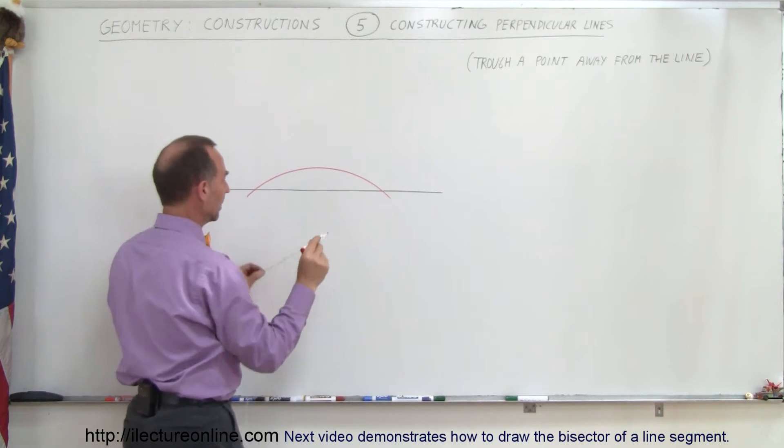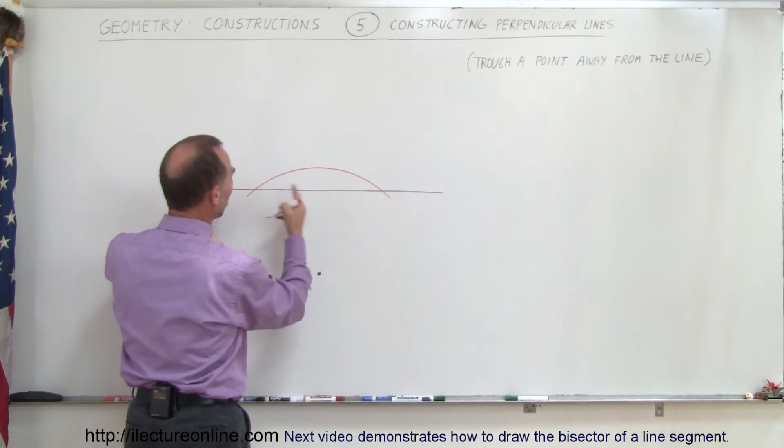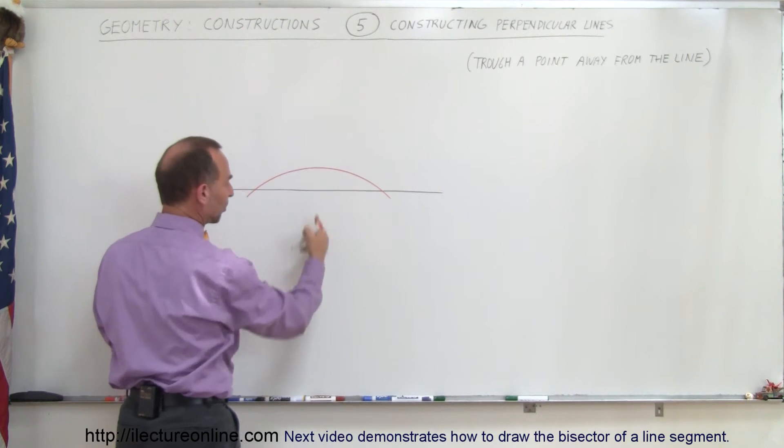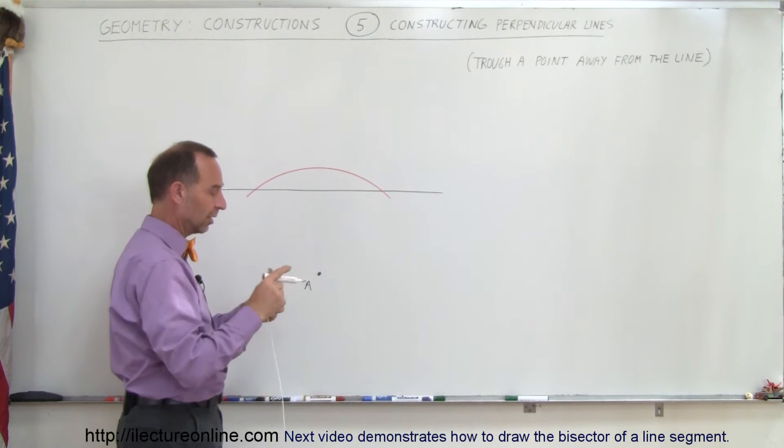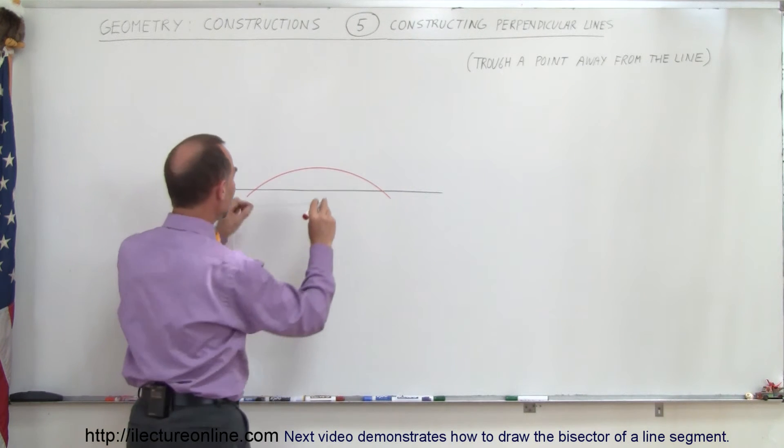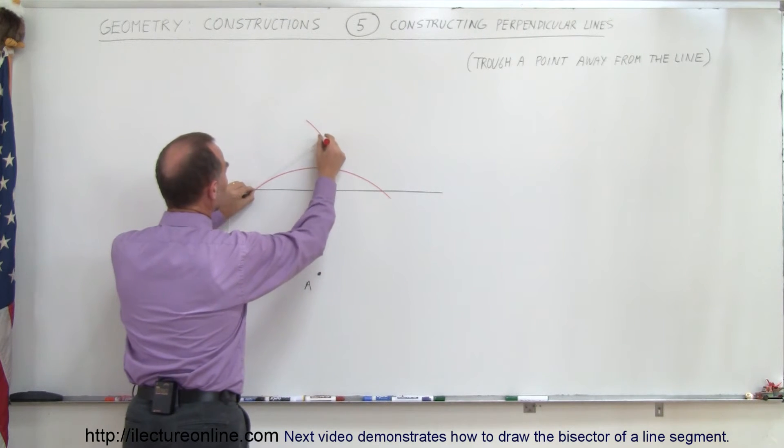Now what you do is go to this point right there. You know that those two points are equidistant from the line that's perpendicular to the first line, so it doesn't matter how long the second compass line is going to be, but you come up here and then you draw a little arc line there.